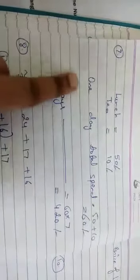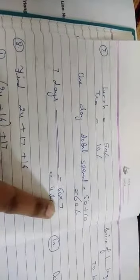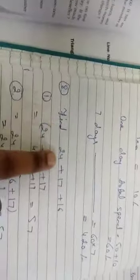Question number seven: A man pays 50 rupees for lunch and 10 rupees for tea each day. How much does he spend in 7 days on these things? The solution is: lunch pay 50 rupees and tea pay 10 rupees each day, so total amount in one day is 60 rupees. If you spend 60 rupees in one day, in 7 days it will be 60 into 7, which is 420 rupees.